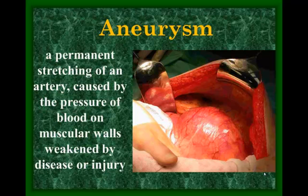An aneurysm is a permanent stretching of an artery. When it permanently stretches, it loses elasticity and the lining becomes very thin — like a balloon blown up repeatedly. The picture shows an aneurysm of the aorta, the largest artery, which looks almost like a balloon. Aneurysms are very serious: if they burst, wherever that artery was carrying blood won't receive it anymore, which can cause a heart attack if it's a coronary artery, or a stroke if it's in the brain.